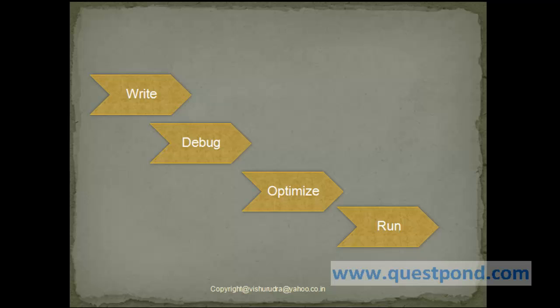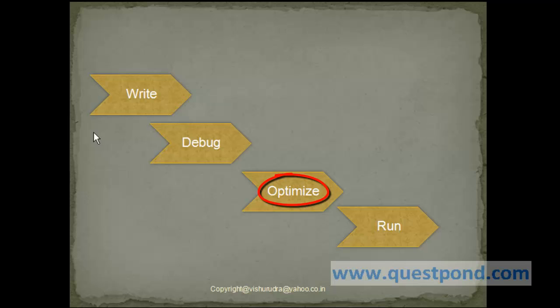After writing the code we debug the same, following which we can optimize it. Optimization can be done with respect to browser or across browsers, and finally run the application so that we will be able to see the exact working of the web application as required.